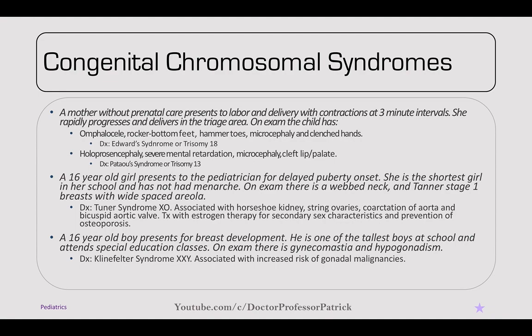A 16-year-old girl presents to the pediatrician for delayed puberty. She's the shortest girl in her school and has not had menarche. On exam, there's a webbed neck and Tanner stage one breast with wide-spaced areola — phenotypic of Turner syndrome, which is XO. It's associated with horseshoe kidneys, streak ovaries, inability to conceive, coarctation of the aorta, and bicuspid aortic valve. Treatment is estrogen therapy for secondary sex characteristics and prevention of osteoporosis.